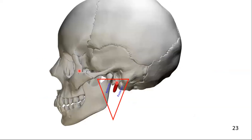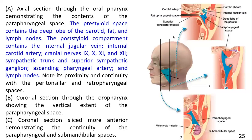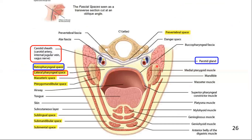The styloid process and associated muscles and fascia divide the lateral pharyngeal space into two compartments. One is the anterior compartment — the pre-styloid — with the styloid process and its associated muscles forming the posterior border. The posterior compartment — post-styloid — is bordered anteriorly by the styloid process. Both compartments are important to assess the severity of the infection. The anterior compartment contains the deep lobe of the parotid gland, fat, and lymph nodes, while the posterior compartment contains the carotid sheath and its contents.